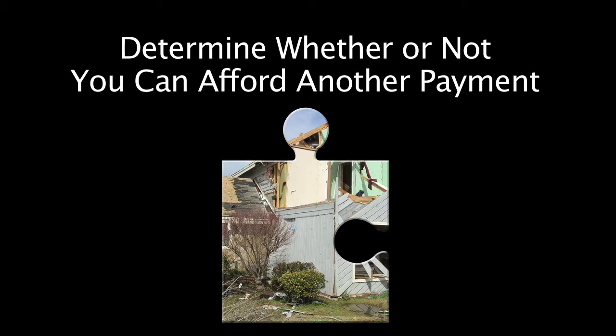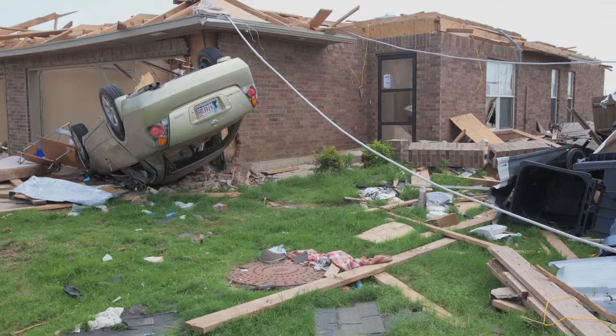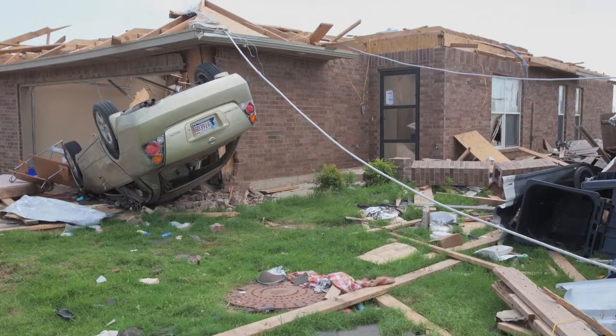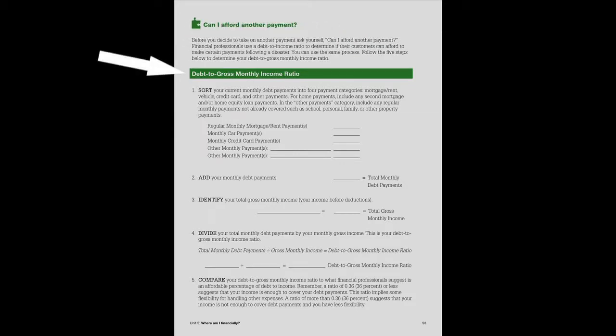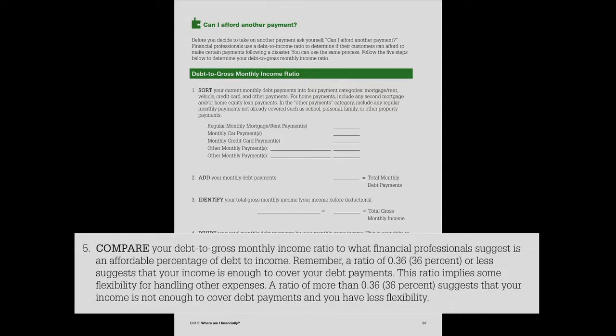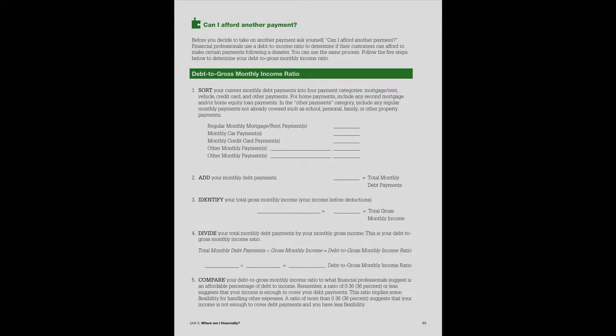Step 3: Determine whether or not you can afford another payment. Before you decide to take on another payment to pay for disaster recovery, ask yourself: can I afford another payment? Comparing your debt-to-income ratio to what financial professionals consider an affordable amount of debt will identify another piece of your post-disaster financial puzzle. When used with the other assessment tools, you will have a better understanding of the big picture of your post-disaster financial situation. It will better prepare you to determine which actions to explore and what financial options are available. The worksheet to help you determine if you can afford another payment is available in Unit 5 of the Family Financial Toolkit.